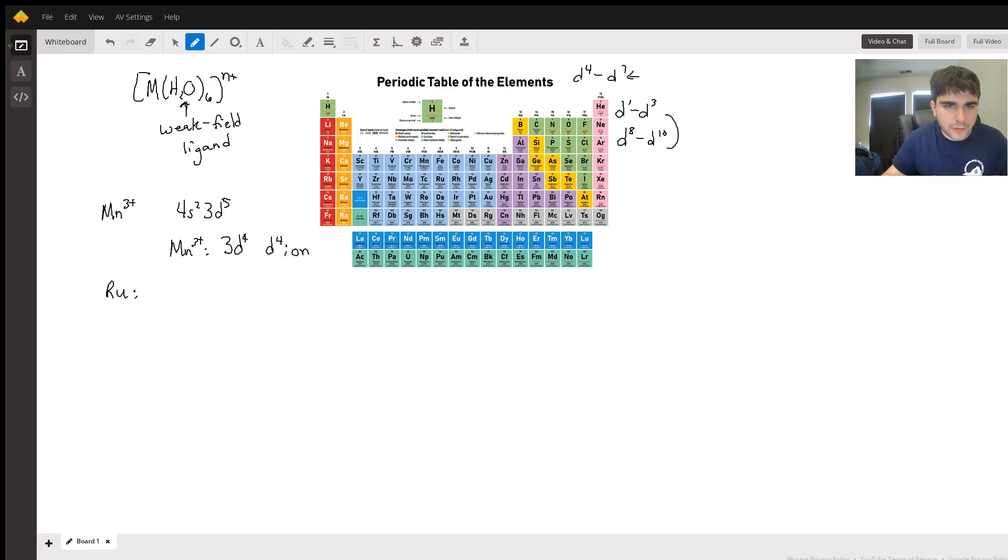Now, ruthenium is a group below, a group below iron. So that's 44.